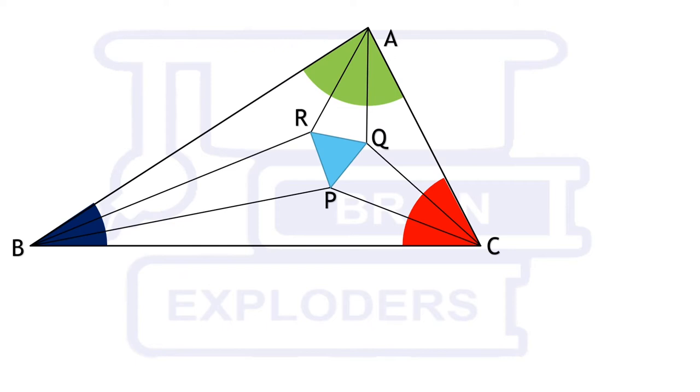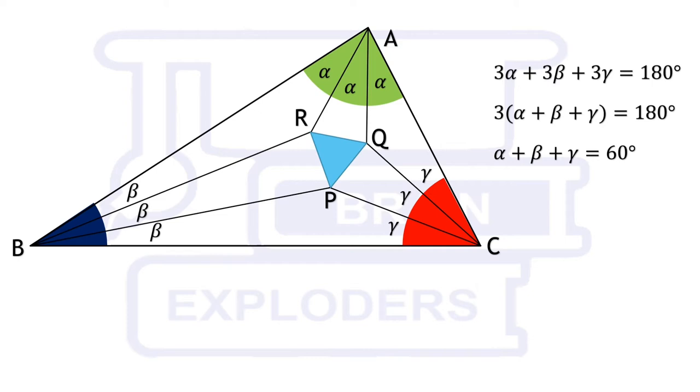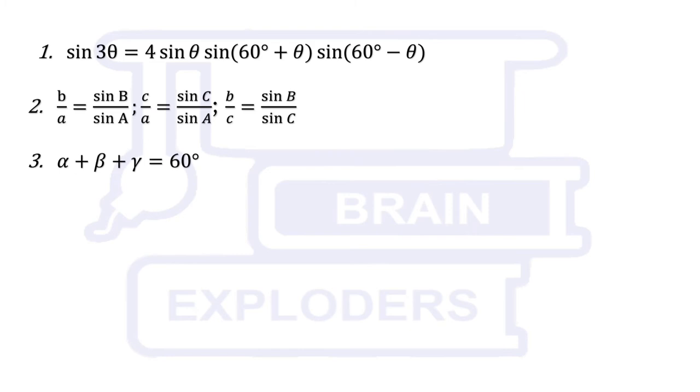Third one is simplest. If angles A, B and C are divided into three equal angles alpha, beta and gamma respectively, then alpha plus beta plus gamma equals 60 degrees. This is so because sum of interior angles of a triangle is 180 degrees. Besides these, only some basic properties will be used.